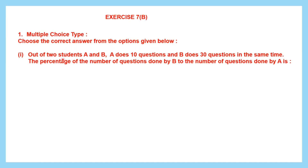First one: out of two students, A and B, A does 10 questions and B does 30 questions in the same time. We have to find the percentage of the number of questions done by B to the number of questions done by A.